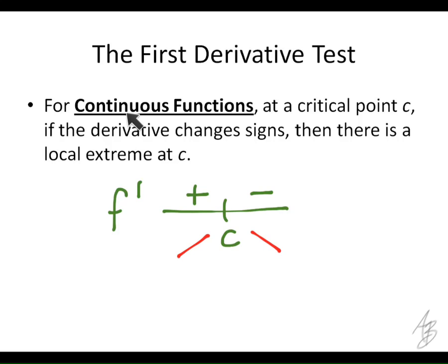Now, why is it important that we say here that it's a continuous function? If we had something that was increasing to the left of c and decreasing to the right of c but had a discontinuity at c, it wouldn't have a local maximum at c. So it only works if it's continuous — if the limit of the function coming from the left equals the limit coming from the right and equals the value of the function itself. Then, as long as it's increasing to the left and decreasing to the right, it's going to be a maximum.